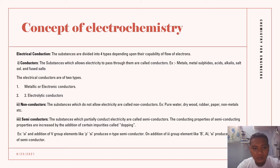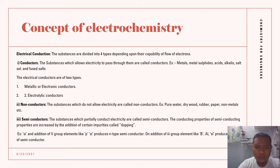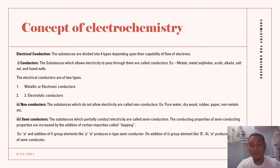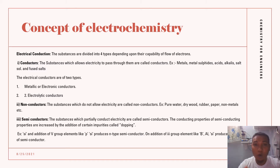The next type is non-conductors. Non-conductors are substances which do not allow electricity to pass — they are called non-conductors. Examples are pure water, dry wood, rubber, paper, non-metals, etc. Now, why is pure water a non-conductor?